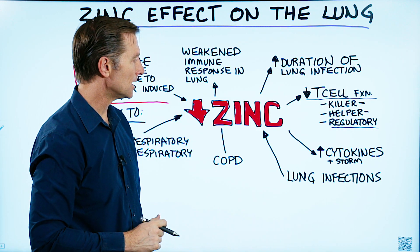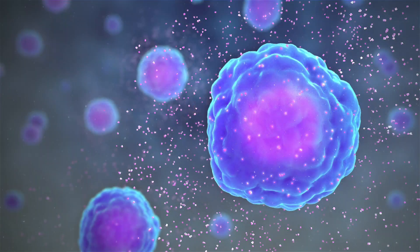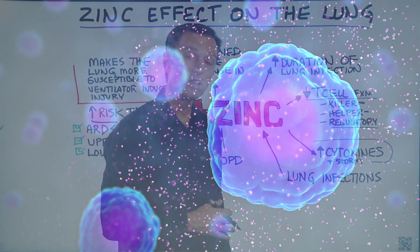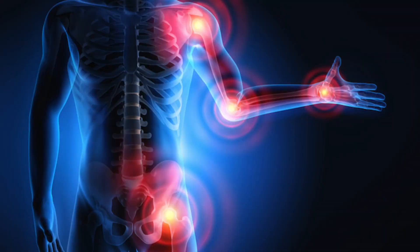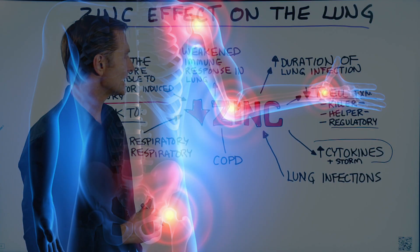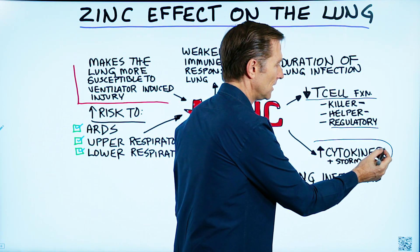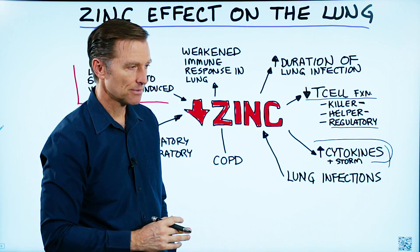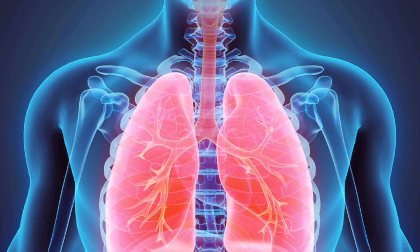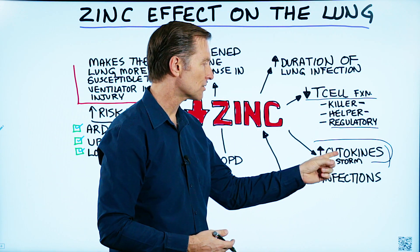If you're zinc deficient, you'll have a lot more cytokines. Cytokines have many different functions — one being messengers, another being pro-inflammatory, so they can cause inflammation. That's all part of the immune process, but sometimes it gets out of hand. If you're deficient in zinc, you could potentially even go into a cytokine storm, where you have this serious inflammatory condition of the lung, and that can lead to scar tissue. A zinc deficiency could be a contributing factor to this.